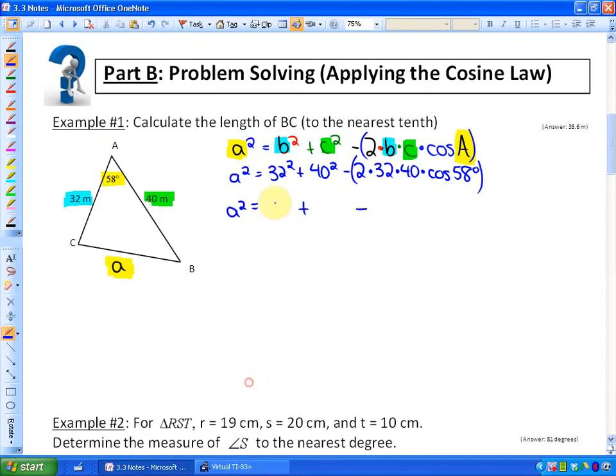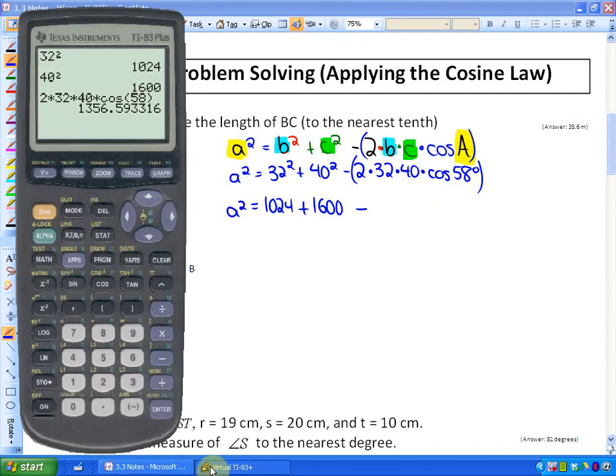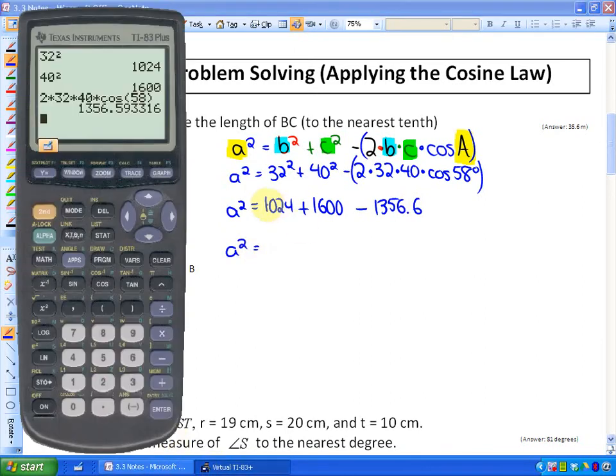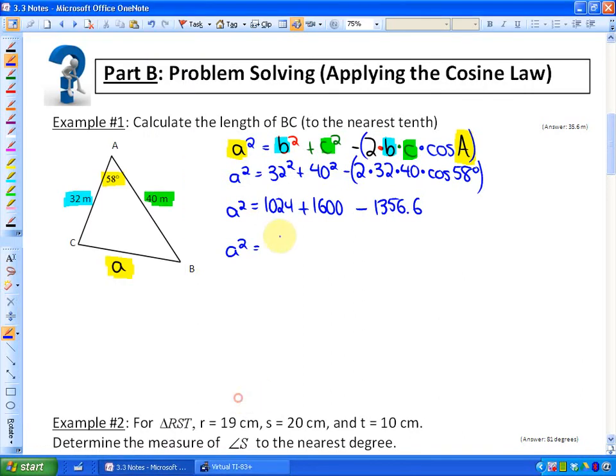So 32 squared, 1024, 40 squared was 1600, and that's minus the product inside the brackets there, which is approximately 1356.6. I'll just leave it there, 1356.6. The next step, as Bedmas suggests, or order of operations, is to add or subtract, so I'm going to find out what this entire sum is here, so 1024 plus 1600 minus 1356.6, so 1267.4.